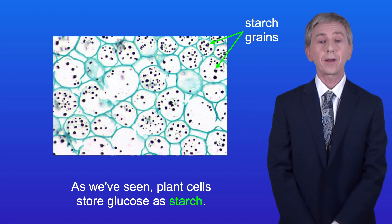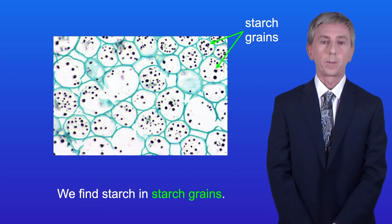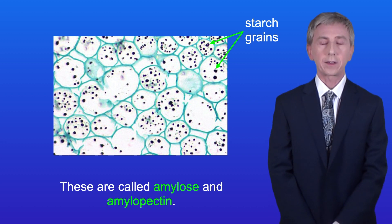As we've seen, plant cells store glucose as starch and we find starch in starch grains. Now starch actually consists of two molecules. These are called amylose and amylopectin.